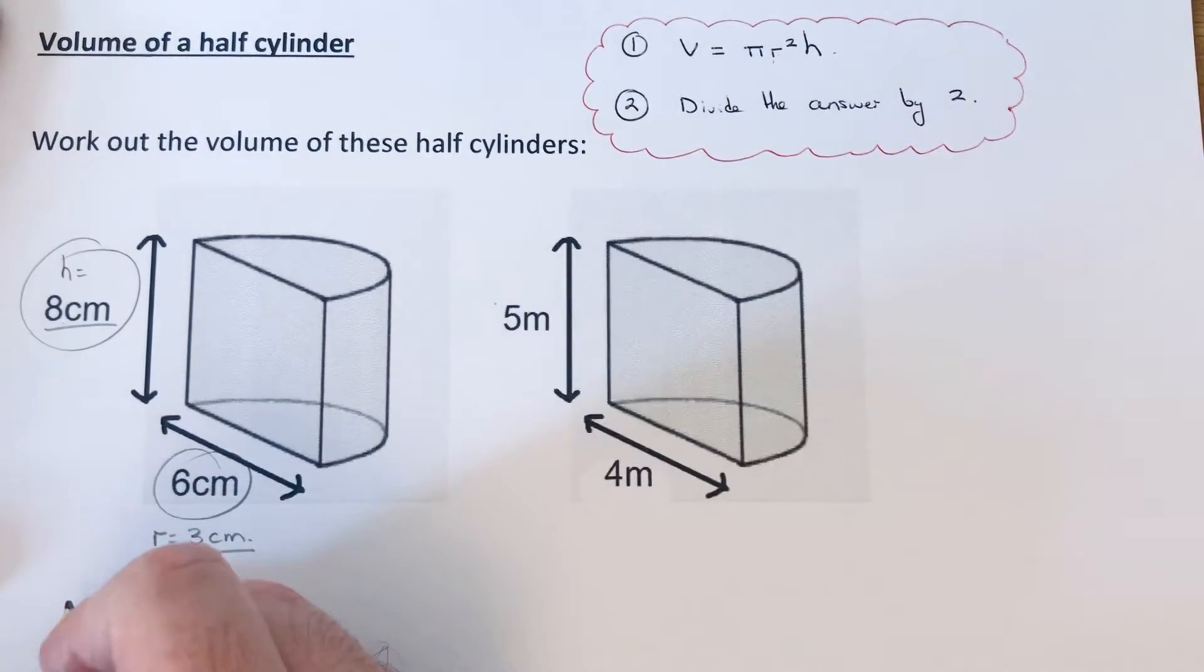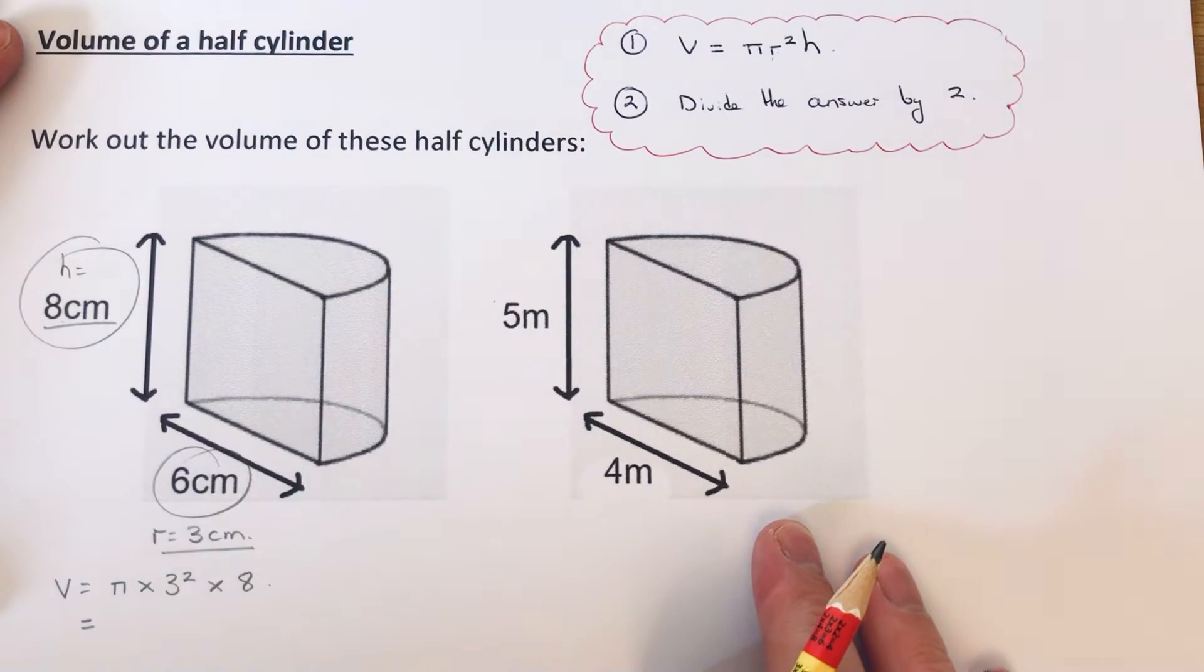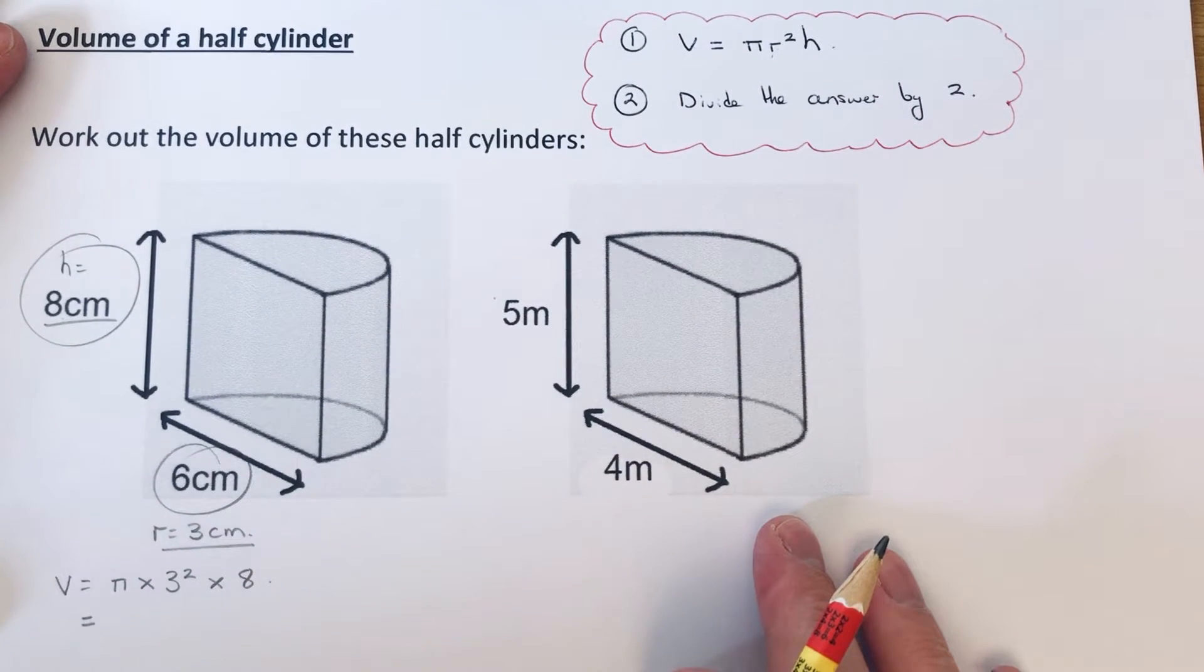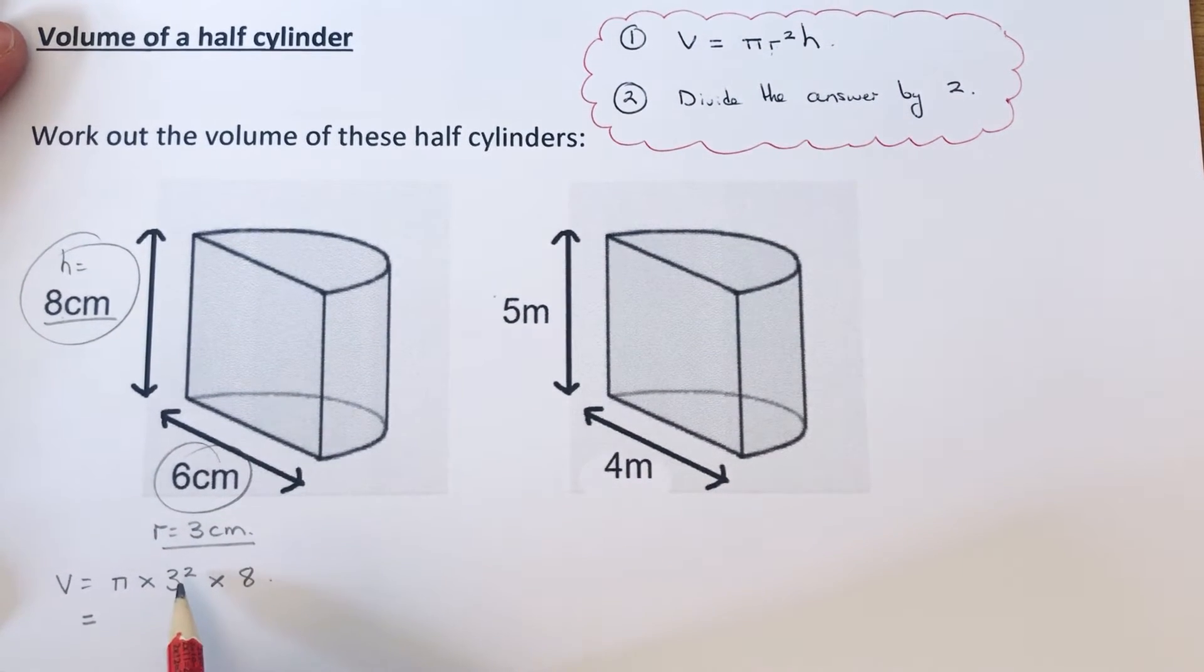So it'd be V = π × 3² × 8. We can actually do this in terms of π so we don't need to use a calculator. 3 squared is 9, 9 × 8 is 72, so that will give us 72π.